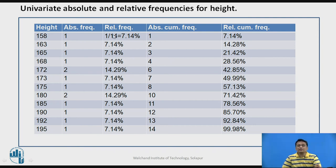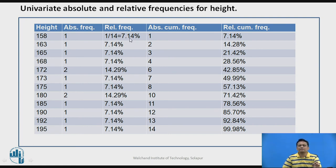For relative frequency, consider height 158 cm: there is 1 person out of 14, so the relative frequency is 1/14, which equals 7.14 percent. For height 172 cm, there are 2 out of 14, giving 2/14 = 14.29 percent. These relative frequency values are calculated for all unique height values in the same manner.